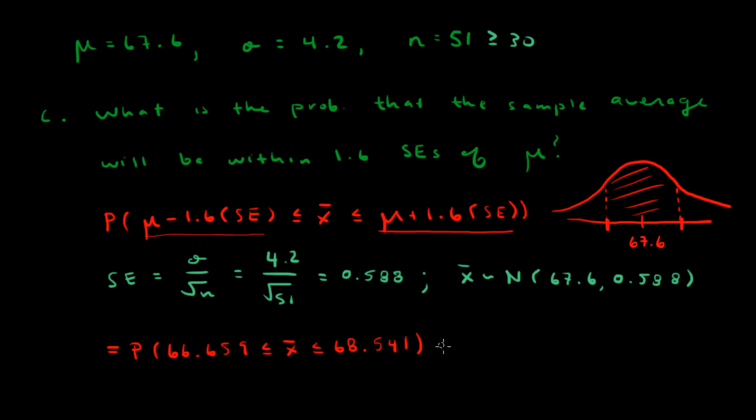And this we can rewrite as 1 minus 2 times the probability that x bar is greater than 68.541. This works because this tail probability and this tail probability are the same, because this distance and this distance are the same and the curve is symmetric. So 1 minus this probability minus this probability will give you the red part, and that's exactly what this expression says.